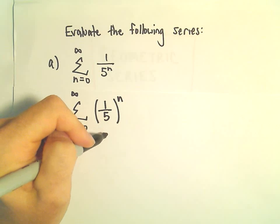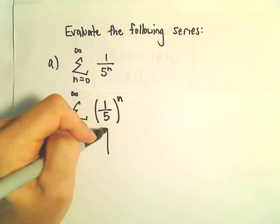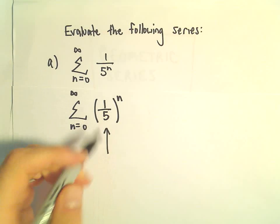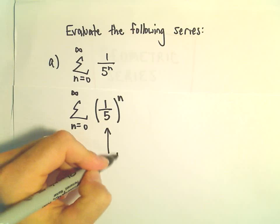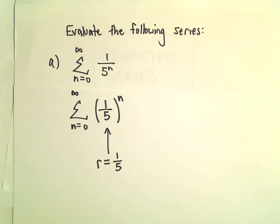So in this case this is going to be a convergent geometric series. Remember the number that's getting raised to the power, that's our r value. So in this case r is 1 fifth.